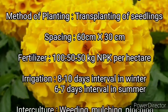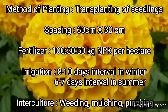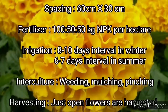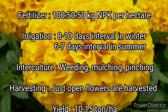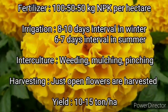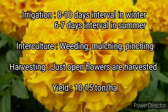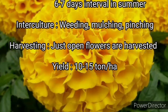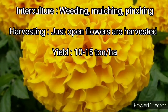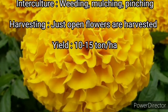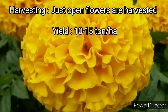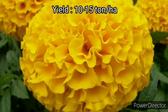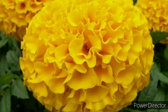Fertilizer dose is 100 x 50 x 50 kg NPK per hectare. Irrigation is done at 8 to 10 days interval in winter and 6 to 7 days interval in summer. Interculture can be done by weeding, mulching, and pinching. In case of harvesting, just-open flowers are harvested and the yield is 10 to 15 tons per hectare.